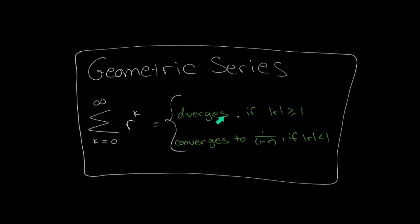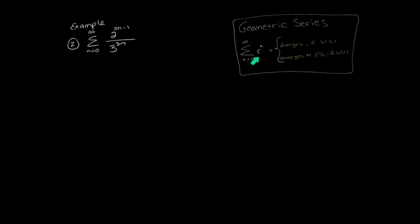Geometric series diverges if the absolute value of r is greater than or equal to one, and it converges to one over one minus r if the absolute value of r is less than one. Your job is to apply these rules in examples. A geometric series has a number in the base — which we usually call r — raised to the value of k, which is the indexing of the sequence. It doesn't really matter what the indexing variable is called; you just need a number in the base and the indexing up in the exponent in order to identify it as a geometric series.